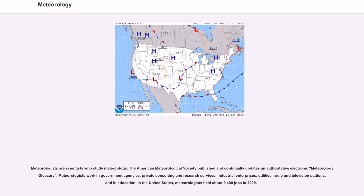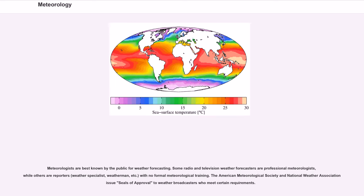Meteorologists are scientists who study meteorology. The American Meteorological Society published and continually updates an authoritative electronic meteorology glossary. Meteorologists work in government agencies, private consulting and research services, industrial enterprises, utilities, radio and television stations, and in education. Meteorologists are best known by the public for weather forecasting. Some radio and television weather forecasters are professional meteorologists, while others are reporters or weather specialists with no formal meteorological training.